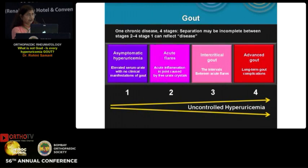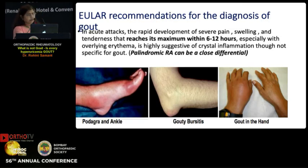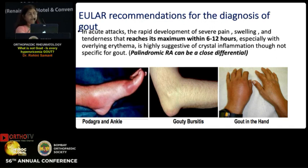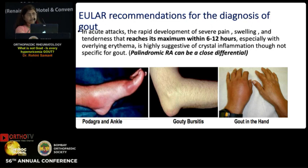Before we look at what is not gout, I'd like to take you through a few clinically oriented EULAR recommendations for the diagnosis of gout. One of the ten recommendations states that an acute attack with rapid development of pain, swelling, and tenderness that reaches its maximum within 6 to 12 hours — especially with overlying erythema — is highly suggestive of crystal inflammation, though not specific for gout. This acute pain and swelling can occur in the joint, in the bursa, or sometimes even in an enthesis.